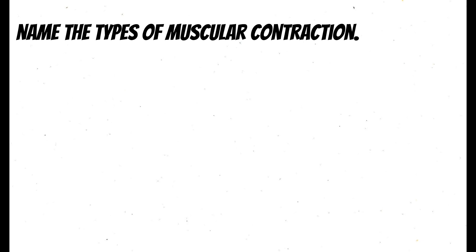Next: name the types of muscular contractions. There are three types: concentric, isometric, and eccentric. For isometric, this is a muscular contraction in which the length of the muscle does not change. For eccentric, this is a muscular contraction where the muscle lengthens — a forced lengthening of the muscle while contracting.